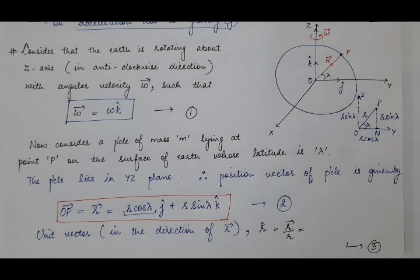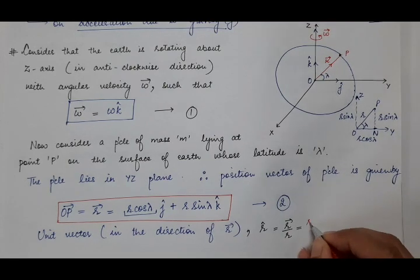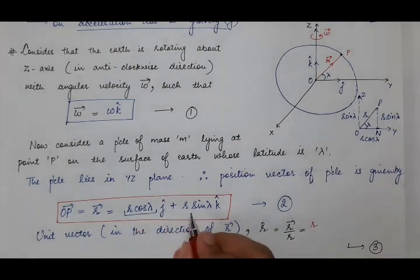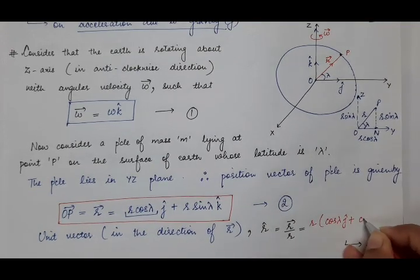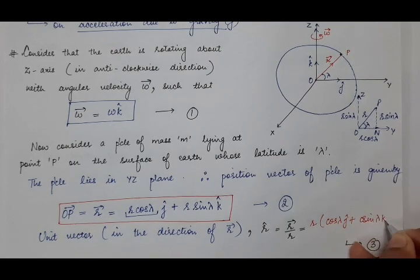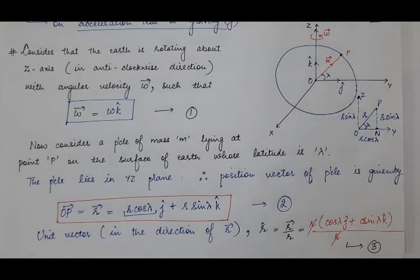The position vector r-vector equals r cos lambda j-cap plus r sin lambda k-cap (equation 2). The unit vector r-cap equals r-vector divided by its magnitude r, giving r-cap equals cos lambda j-cap plus sin lambda k-cap. Suppose this is equation 3.